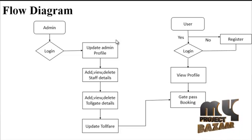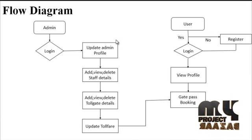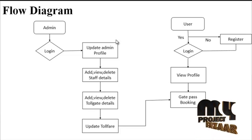Let's see our project data flow diagram. In our system, it is easy and interesting to get Tollgate access through our system. There are two models: Admin and User. Admin initially logs in with a username and password. Admin has rights to update the admin profile, add/view/delete staff details, add/view/delete Tollgate details, and update Toll fare. For users, existing users directly log in to the system; otherwise, a new user registers first and then logs in. Users have rights to view their profile, book a gate pass, and track vehicles in a particular area.